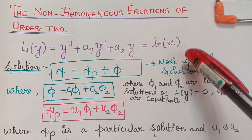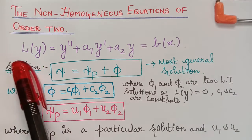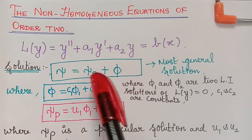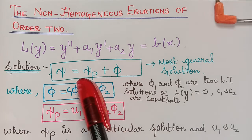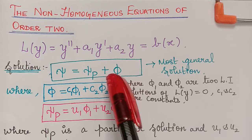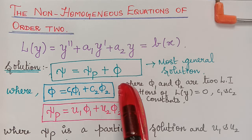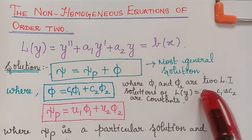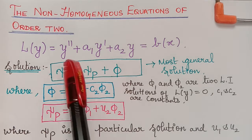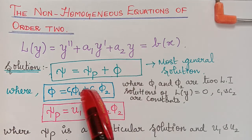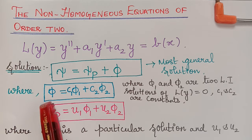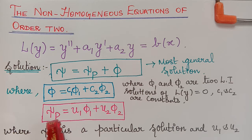Now L of y equal to B of x will have a most general solution xi, which will be equal to the sum of the particular solution xi_p and the solution phi. This phi is given by c1*phi1 plus c2*phi2, where phi1 and phi2 are linearly independent solutions of L of y equal to 0. The particular solution xi_p is equal to u1*phi1 plus u2*phi2.